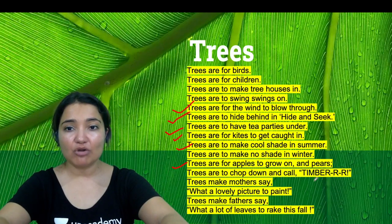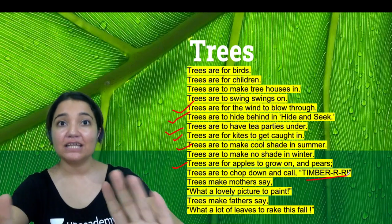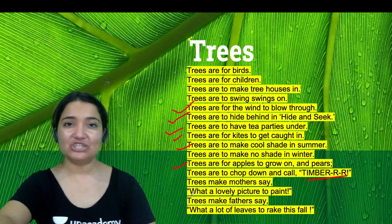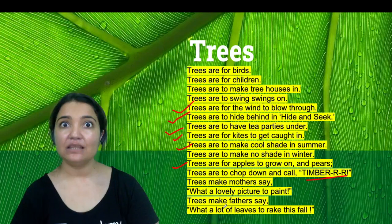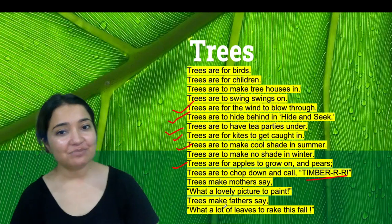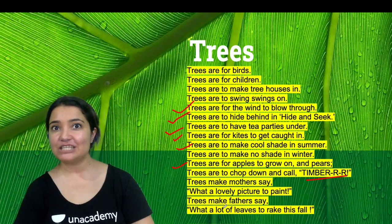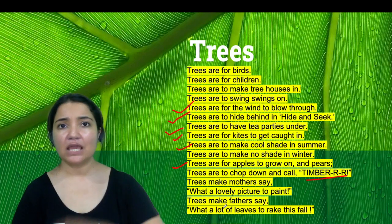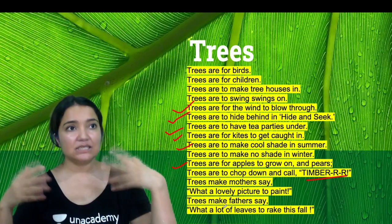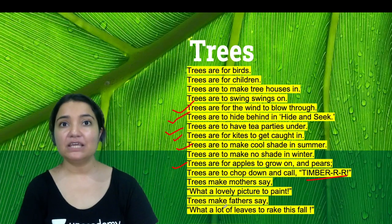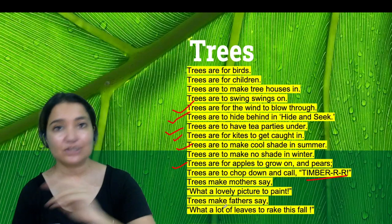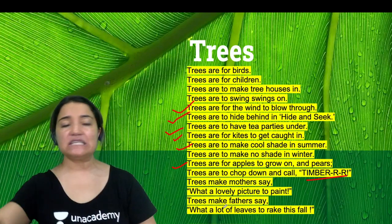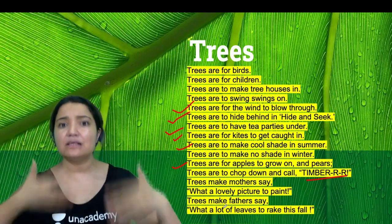Trees are to chop down and call on timber — trees are cut to make timber and furniture for our houses. Trees make mothers say 'What a lovely picture to paint!' — because of trees, mothers say wow, what a lovely picture. And trees make fathers say 'What a lot of leaves to rake!' — rake means to sweep or clean. Because of the trees, fathers say 'My god, how many leaves are there this fall!' Fall is a season when all the leaves fall, and fathers look at that and say how many leaves to clean this season.